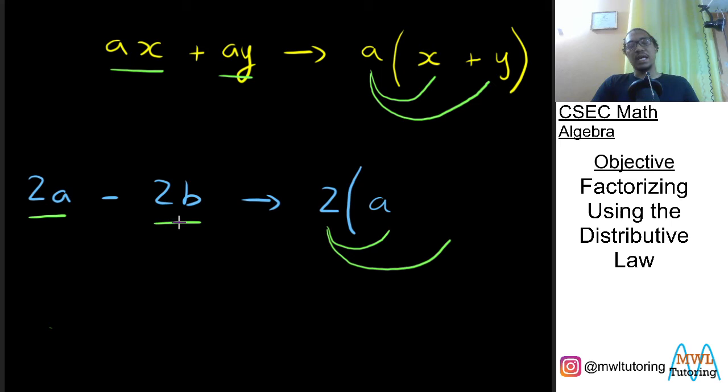And if I want to get back negative 2b, remember we include the negative sign, if I want to get back negative 2b then I need to multiply this 2 by negative b. And there you have it we've successfully factorized this expression again.